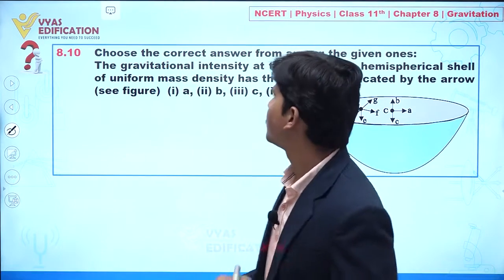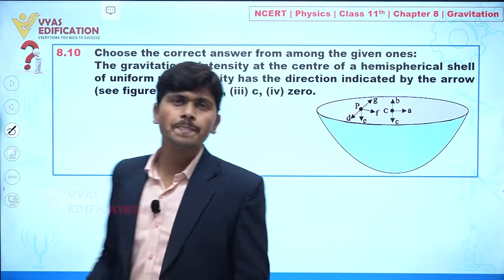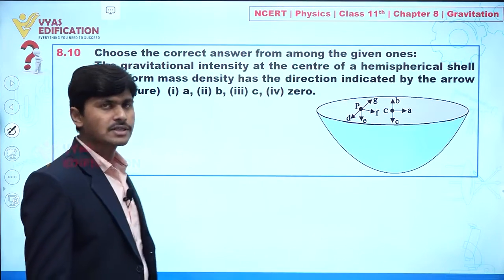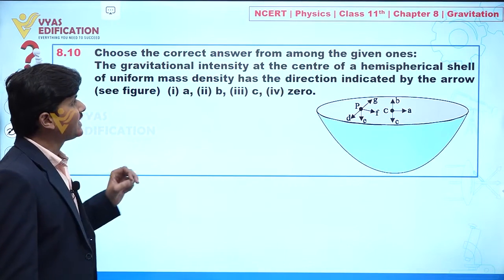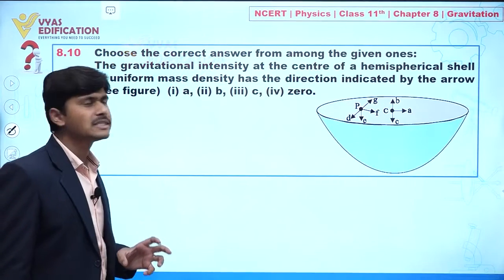Now we are going to discuss question number 8.10. In this question, choose the correct answer from among the given ones. The gravitational intensity at the center of a hemispherical shell of uniform mass density has the direction indicated by the arrow.